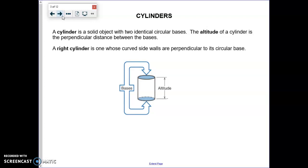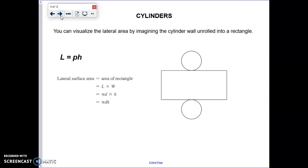What is a cylinder? A cylinder is a solid, three-dimensional object with two identical circular bases. It's very similar to a prism - actually, a cylinder is a prism with circular bases. So all the formulas we had for prisms that deal with lateral area, surface area, and volume will also work with cylinders. The altitude of a cylinder is the perpendicular distance between the bases - that's the height of the cylinder. We're only going to look at right cylinders, which means the sidewalls are perpendicular to the circular base.